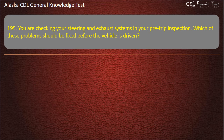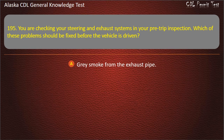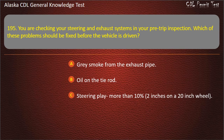Question 195. You are checking your steering and exhaust systems in your pre-trip inspection. Which of these problems should be fixed before the vehicle is driven? Gray smoke from the exhaust pipe, oil on the tie rod, or steering play more than 10% — 2 inches on a 20-inch wheel. Answer: Steering play more than 10%, 2 inches on a 20-inch wheel.